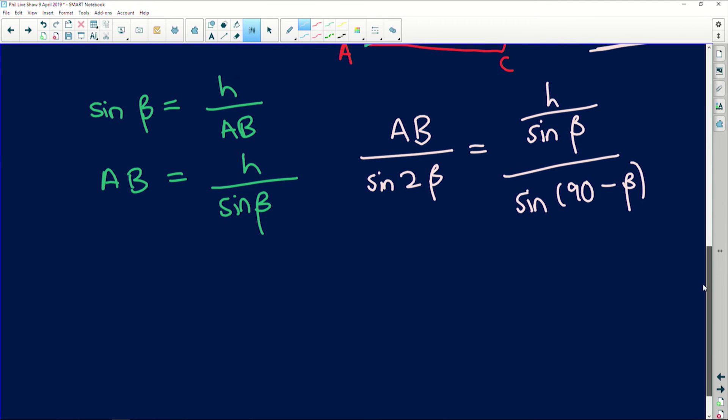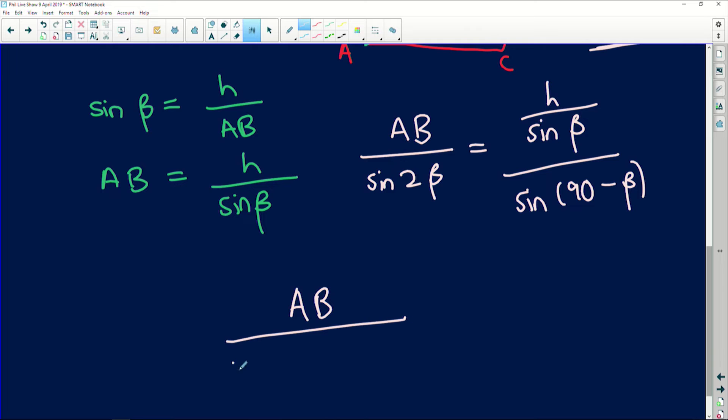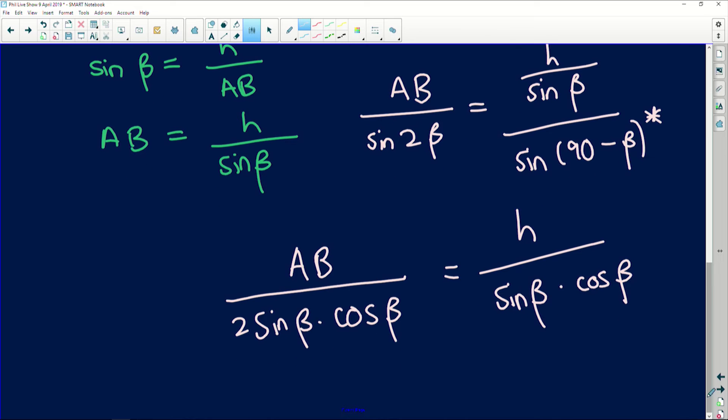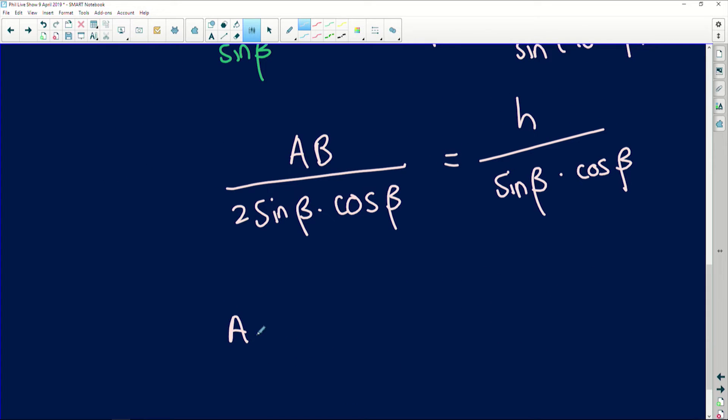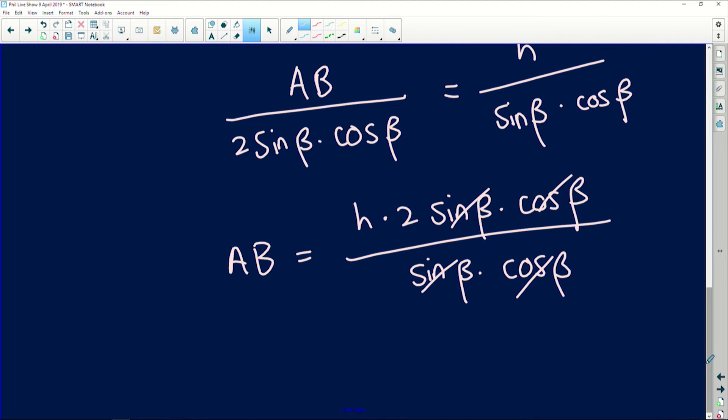Well, we can expand sine of 2 beta to be 2 sine of beta multiplied by cos of beta. That is equal to h over sine of beta, and remember your co-ratio: sine of 90 minus beta is equal to cos of beta. This will cancel, that'll cancel, so we end up with AB. Now if we make AB the subject of the formula, we get h multiplied by 2 sine of beta cos of beta all over sine of beta multiplied by cos of beta. This will cancel, that'll cancel, so we end up with AB is equal to 2h, and that is in terms of h, which is perfect.